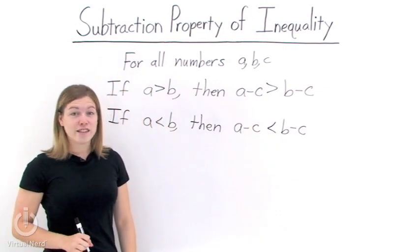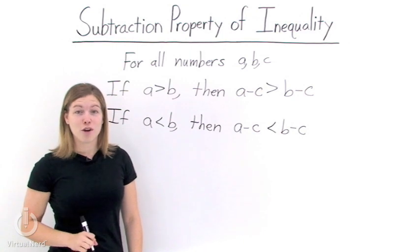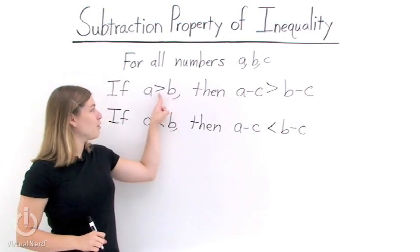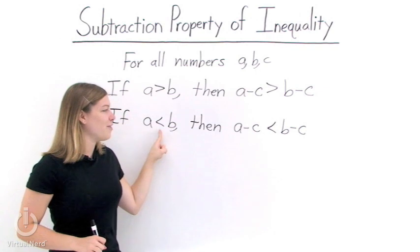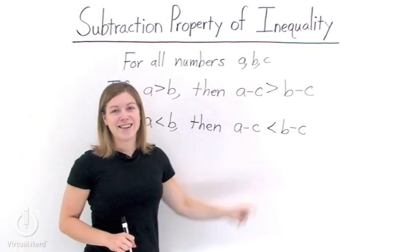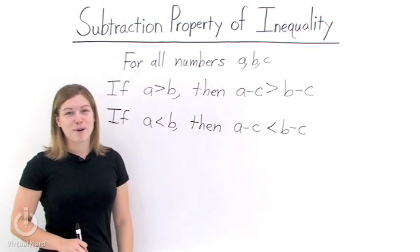Now notice, subtraction does not affect the direction of our inequality. So here we have a greater than and a greater than, and here we have a less than and a less than. Now we know the subtraction property of inequality.